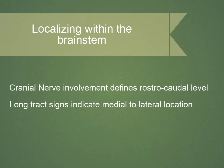The clinical pearl of this talk is contained in this slide, which indicates that in order to localize a lesion within the brainstem, you can first define which cranial nerves are involved in order to place the lesion in its rostral-caudal level — i.e., midbrain, pons, or medulla — and then you use the long tract signs which are involved to indicate which part medially to laterally is involved. These two rules will enable you to localize where the lesion is within millimeters.